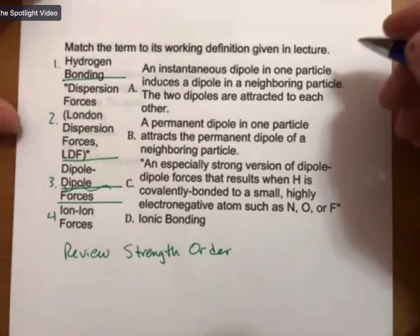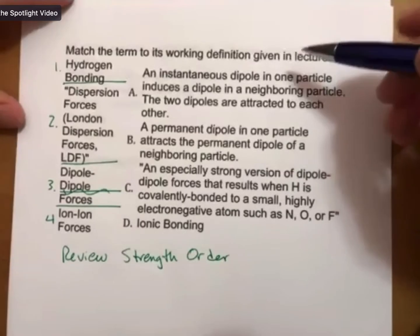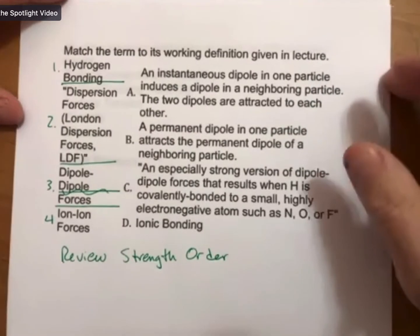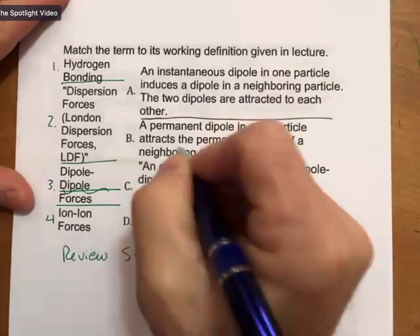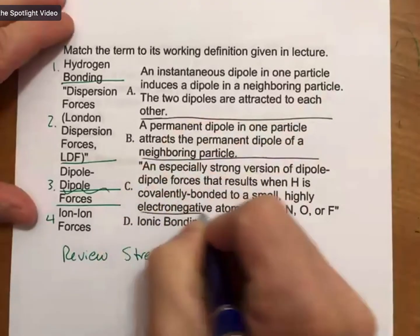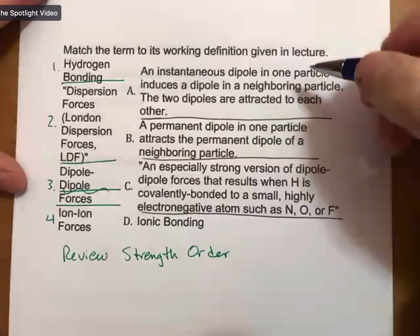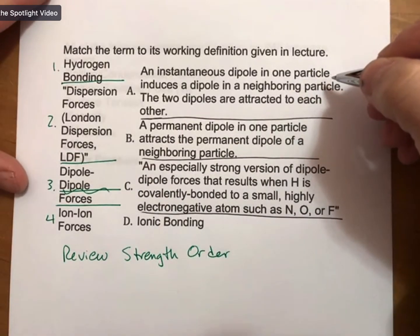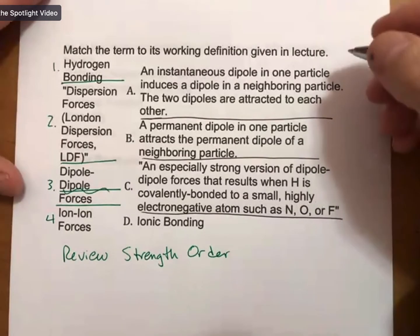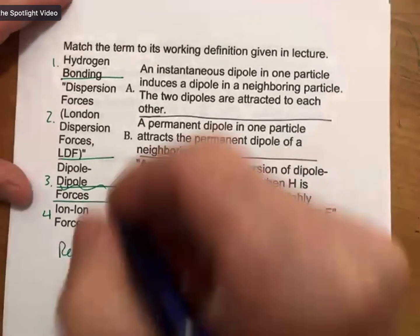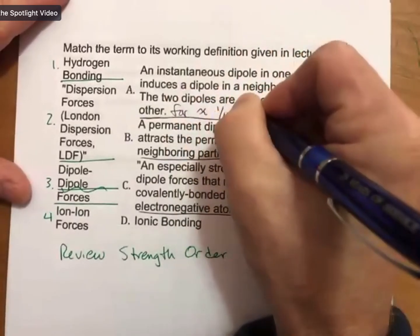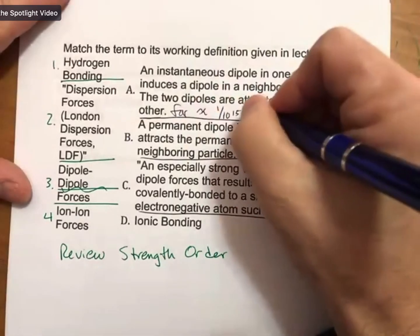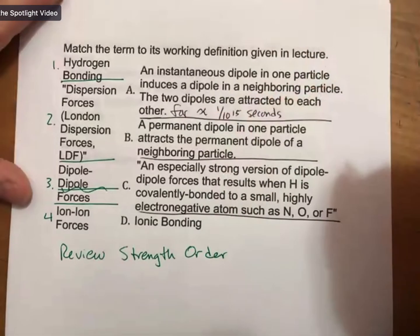This is a matching question. The problem says match the term to its working definition given in lecture. The first term describes an instantaneous dipole in one particle that induces a dipole in a neighboring particle. The two dipoles are attracted to each other for approximately one over ten to the fifteenth seconds, so a very short time.